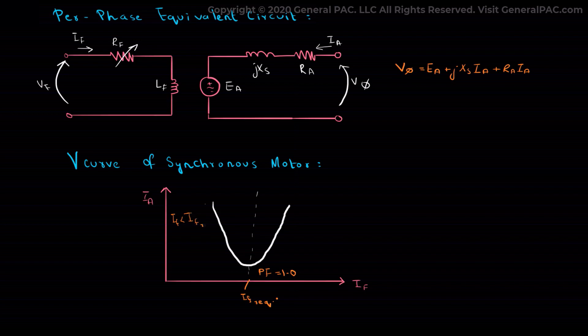For all values of the field current If less than the required If value to give a minimum Ia, Ia is lagging and the reactive power is consumed by the motor.